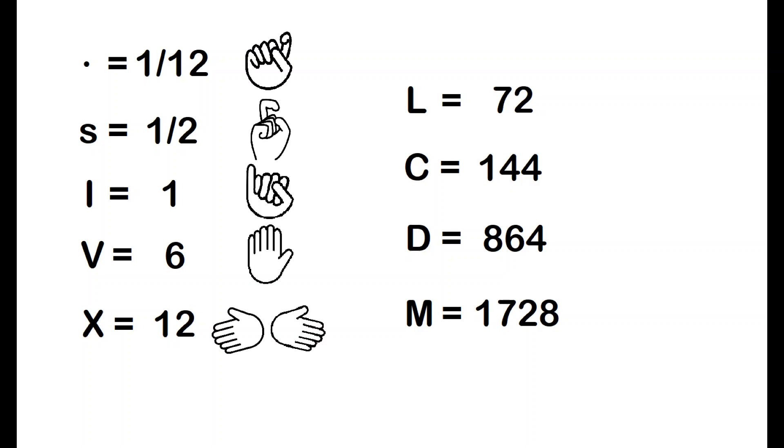So moving up the numbers, we find L as 50 in the decimal system, or 72 if you've got six digits on your hands. L is X times V, and simply an outstretched thumb on one hand.